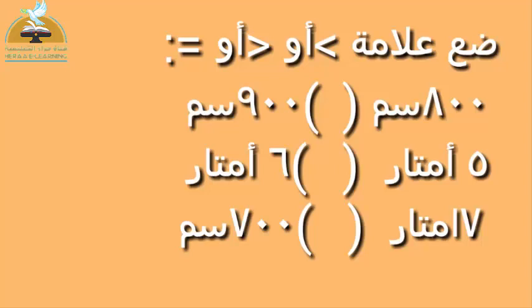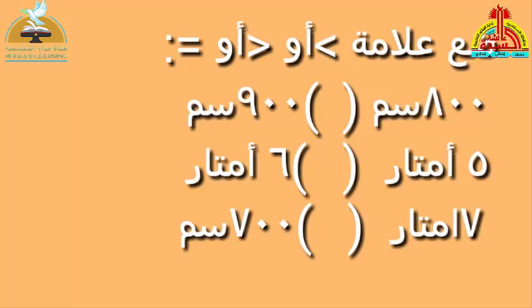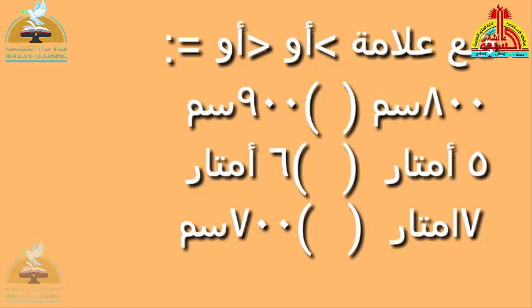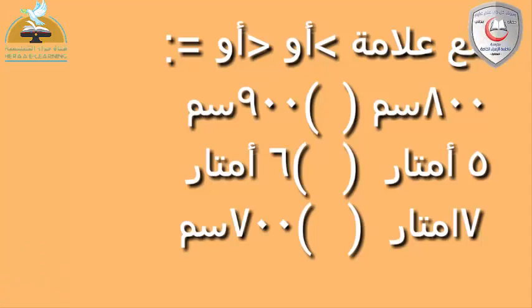رقم 2: الطرف الأول 5 أمتار، الطرف الثاني 6 أمتار. هنا أمتار وهنا أمتار، يبقى المسألة مباشرة: 5 أمتار أصغر من 6 أمتار. رقم 3: 7 أمتار □ 700 سنتيمتر. هنا أمتار وهنا سنتيمتر — الوحدتين مختلفتين، لازم نحول.